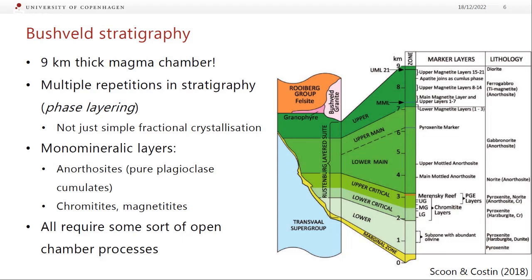To form these chromitite layers there are a few different ideas, but basically all of them need open system processes — either new batches of magma coming in or crustal assimilation. Something that is not just sitting there and crystallizing in a closed system.